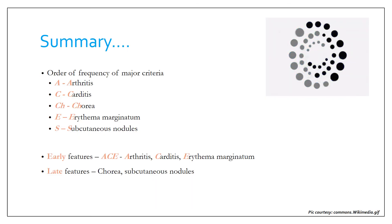To summarize: the order of frequency of major criteria is arthritis (75%), carditis (50–60%), chorea (around 5%), erythema marginatum (1%), and subcutaneous nodules (≤1%). Early features presenting at onset are arthritis, carditis, and erythema marginatum — remembered as ACE — while chorea and subcutaneous nodules present slightly later.